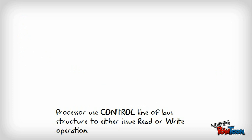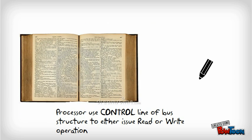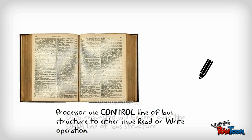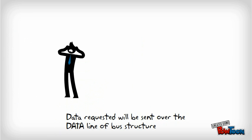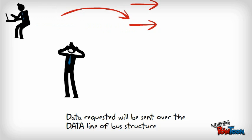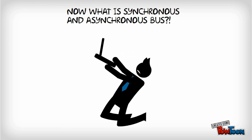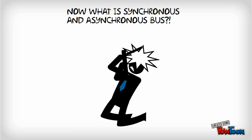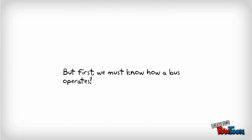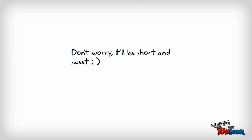The processor uses the control line of the bus structure to either issue a read or write operation. Data requested will be sent over the data line of the bus structure. Now, what is synchronous and asynchronous bus? But first, we must know how a bus operates. Don't worry, it'll be short and sweet.